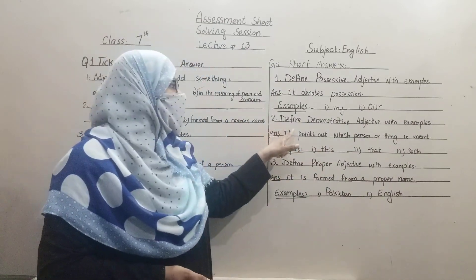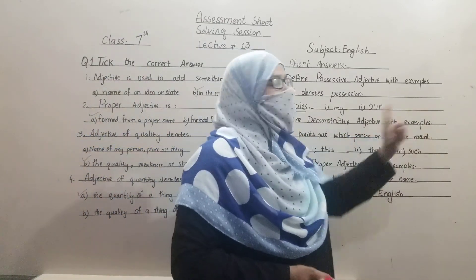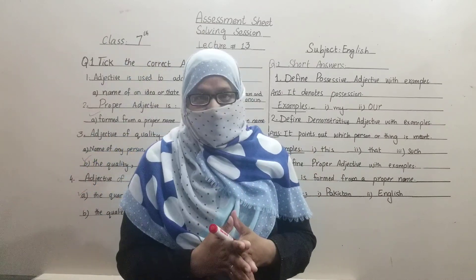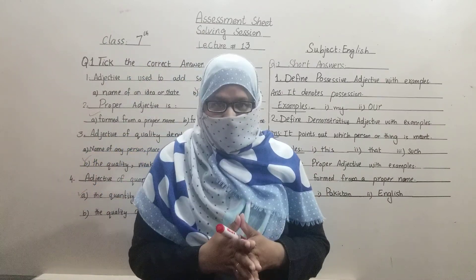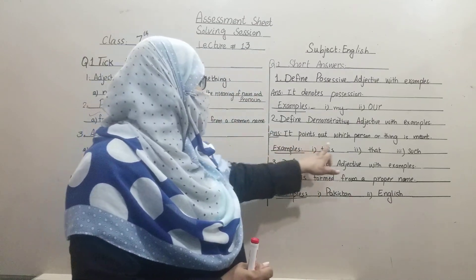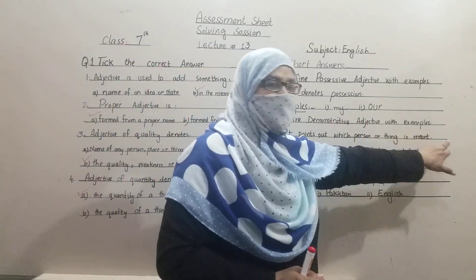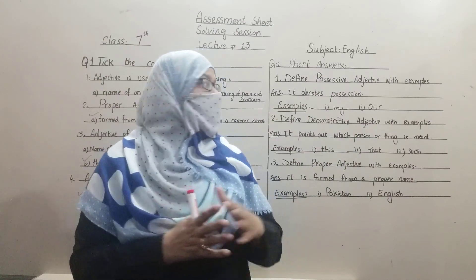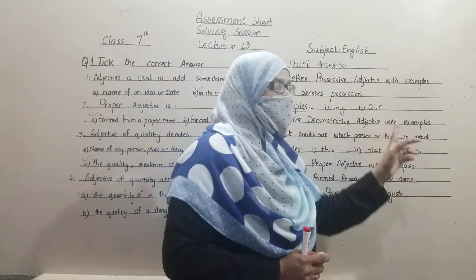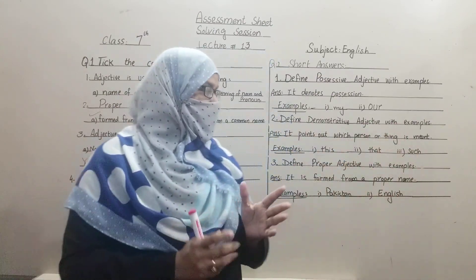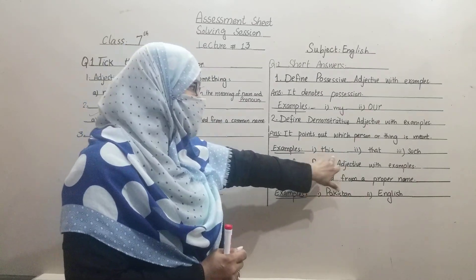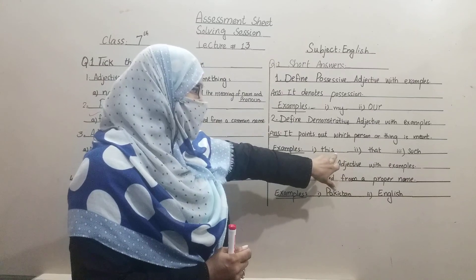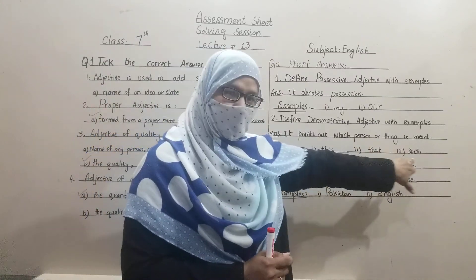Second question — define demonstrative adjective with example. Demonstrative adjective points toward a specific thing or person. It points out which person or thing is meant — for the person or thing being indicated, demonstrative adjective is used. Its examples are: this, that, such — and also these and those.